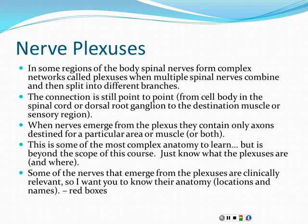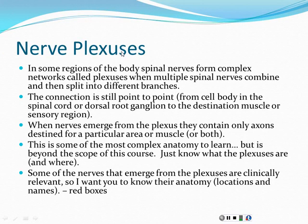In several parts of the body, the ventral rami of multiple spinal nerves join together and then split back apart to form these complicated networks of nerves called plexuses.